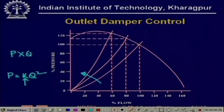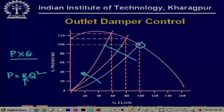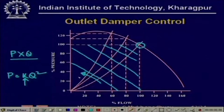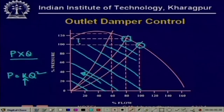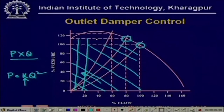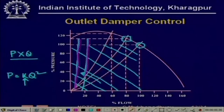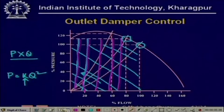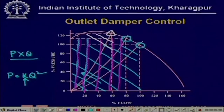Now, what is happening to the energy? The energy in a fan — the energy being delivered — is p times q. In other words, it is the area of this rectangle at any operating point. At this operating point it is the area of this rectangle. When you are at operating point number 2, this is the area. And when you take the third operating point, this is the area — the energy demand.